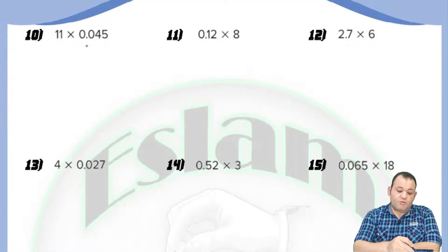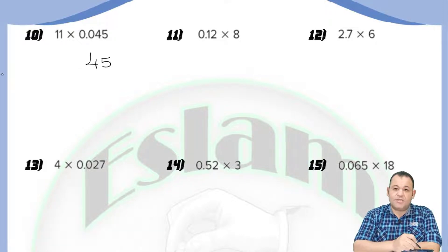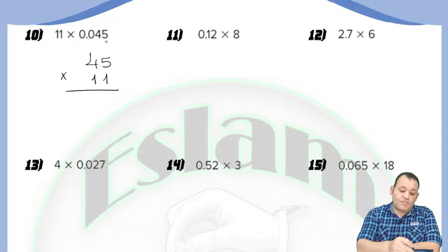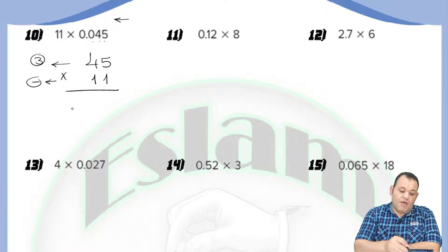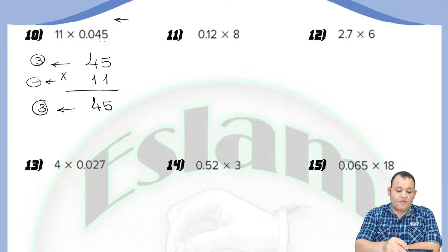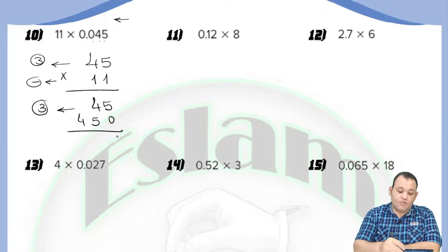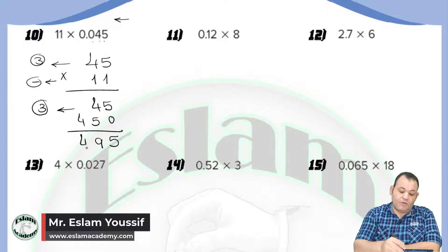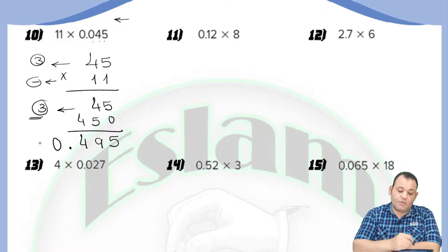In question number 4, we have 11 times 0.045. Write the first number as 45 without a decimal point, multiplied by 11. Counting from the right in 0.045: 1, 2, 3 — we have a decimal point after three digits, and no decimal in 11, so we place the decimal after three digits in the product. 1 times 45 equals 45; then 1 times 45 equals 45 again. Adding: write 5, then 4 plus 5 equals 9, then write 4. Counting three places from the right, the product equals 0.495.